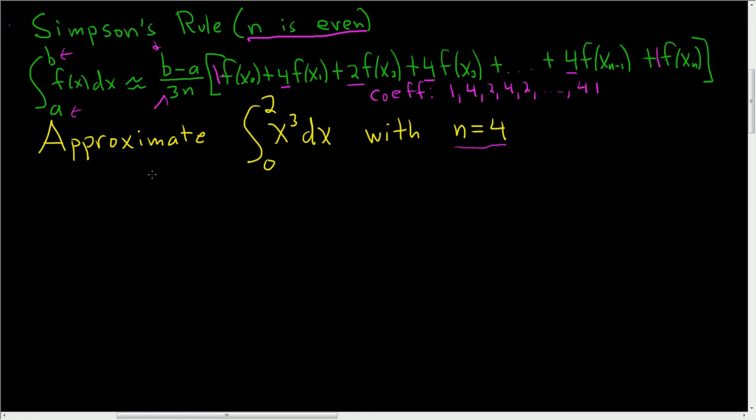Okay, so we're asked to approximate this definite integral with n equals 4, so let's do it. Whenever I use Simpson's rule, I always work this out first. So delta x is equal to b minus a over n. In this case, a is equal to 0, and b is equal to 2, and n is equal to 4. So delta x, well b is 2, a is 0, and then n is 4. So you get 2 over 4, which is 1 half.